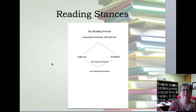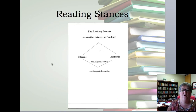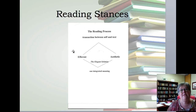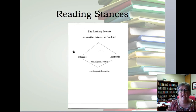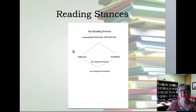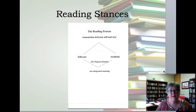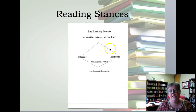Rosenblatt also talked about the reading stances we take when we approach reading. She said the reading process is a transaction between self and text, and that when we approach a text we come from one of two stances. On the far left side of this graphic you see the efferent stance. Efferent comes from the Latin 'a ferry,' which means to take away. If you approach a text with an efferent stance, you're approaching it with the idea of taking something away — like when I sit down with a cookbook, I want to take away a recipe.